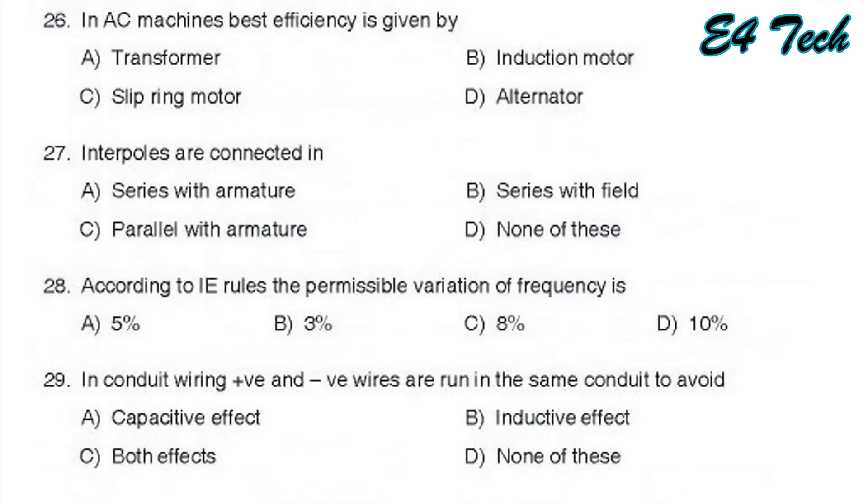In AC machines, the best efficiency is given by transformer, induction motor, slip ring induction motor, and alternator. There is no moving parts of the transformer.